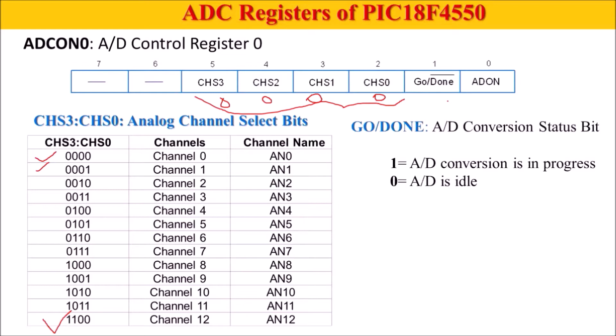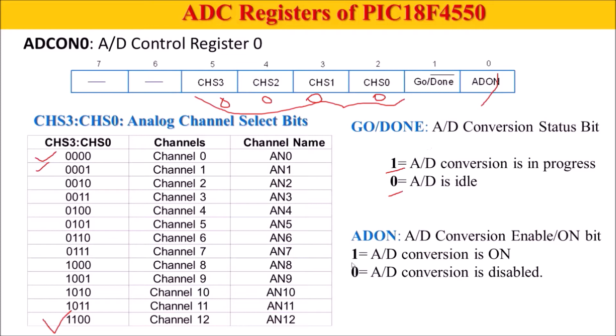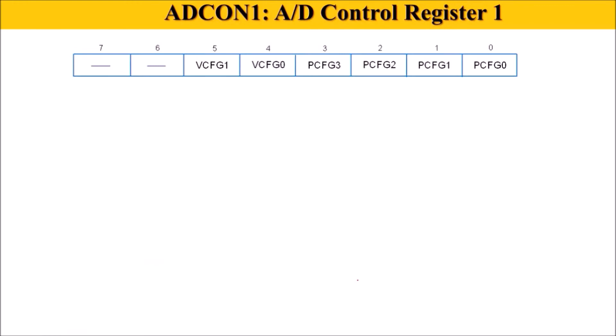The GO/DONE bit indicates ADC status: if this bit is 1, conversion is in progress; when it becomes 0, the ADC has completed conversion. The user can check this bit — 1 means ADC is busy, so no new data can be given; 0 means conversion is complete and the output can be read or the next input connected. The ADON bit turns the ADC on or off: 1 means ADC is on, 0 means ADC is off.